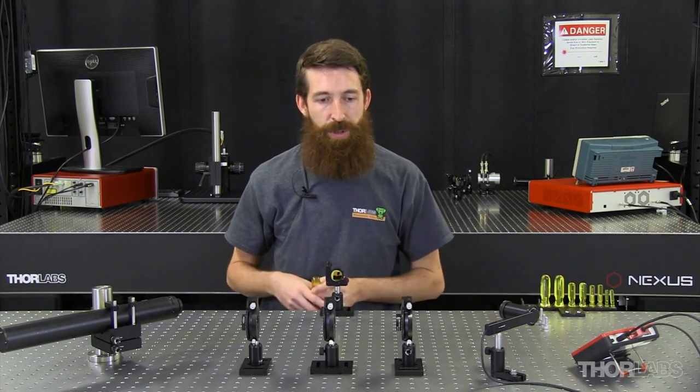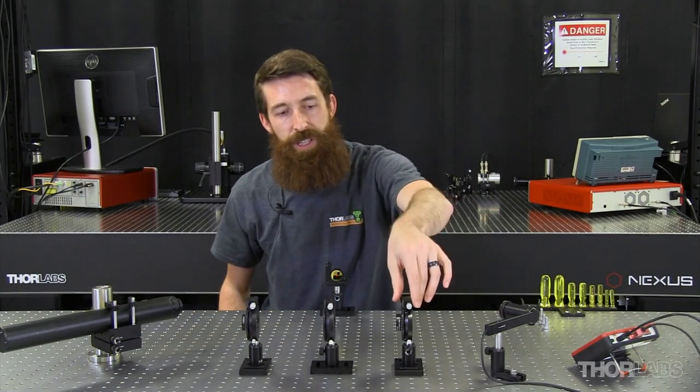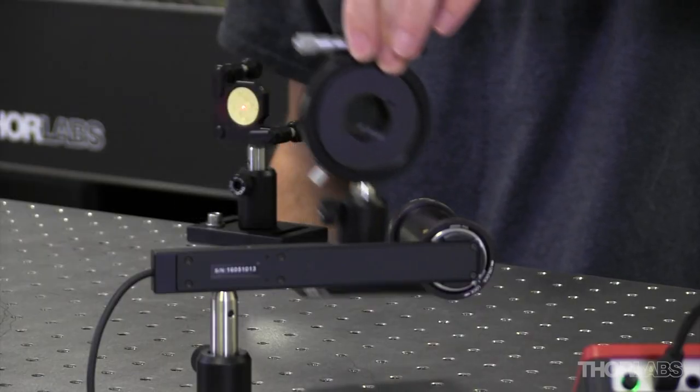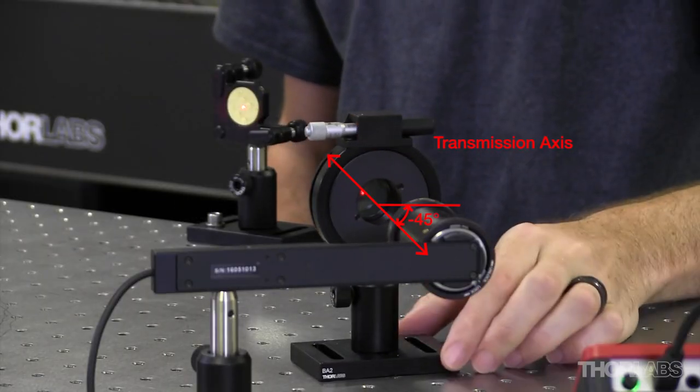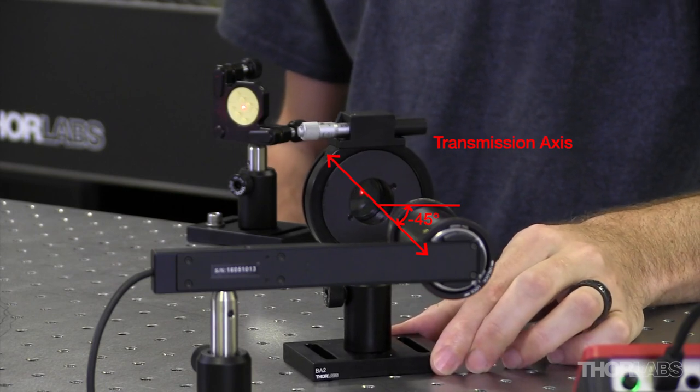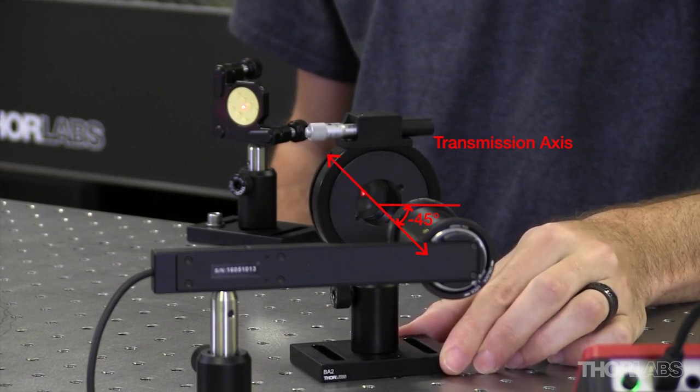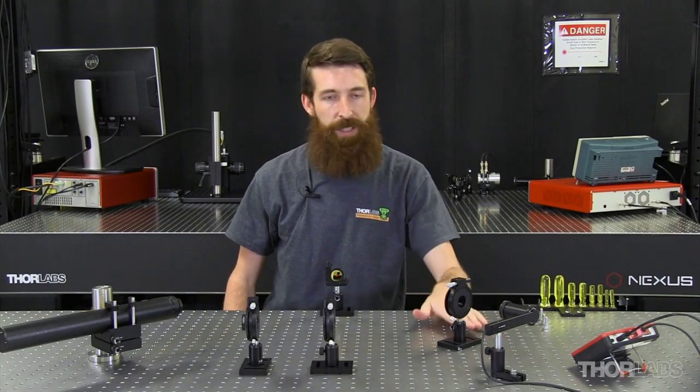So, to start with alignment, I begin with my analyzing polarizer. As I stated earlier, this polarizer is oriented at 45 degrees, and now I did this by placing it between two crossed polarizers, one which is horizontal and one which is vertical.